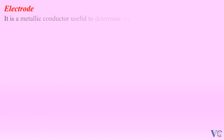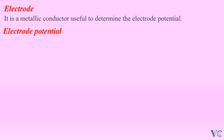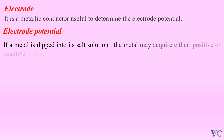An electrode is a metallic conductor useful to determine the electrode potential. If a metal is dipped into its salt solution, the metal may acquire either positive or negative charge compared to its salt solution.